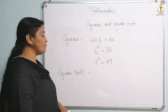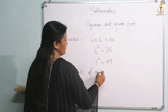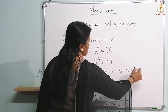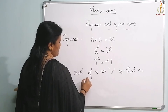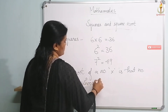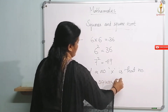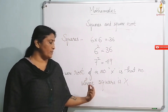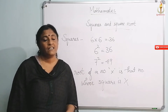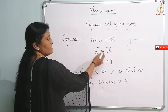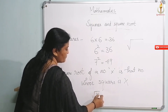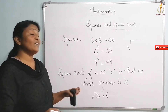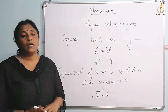Now, what do you mean by square root? The square root of a number x is that number whose square is x. For example, since 6 squared is equal to 36, the square root of 36 is equal to 6. That is what a square root is all about.